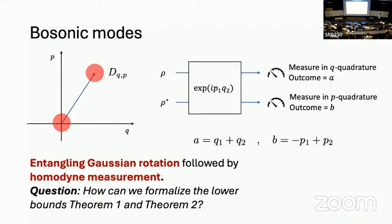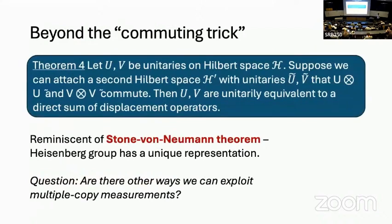An open question for the audience: how can we formalize these lower bounds — the d-dependent sample complexity lower bounds — in the case of a continuous bosonic mode? I don't know how to do that.